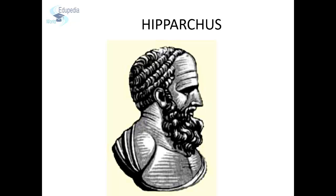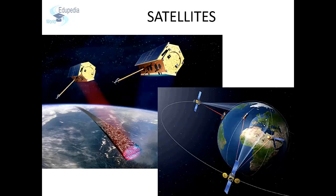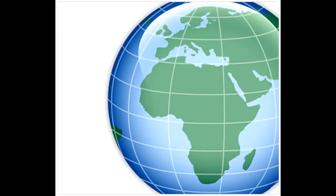It was not until the invention of an accurate clock, or chronometer, in 1736 that longitude could be measured with some accuracy. Today, the task of measuring latitude and longitude has been made simple by navigating satellites in the sky. The lines of latitude and longitude make our grid. The point where latitude and longitude meet is considered the location of that place. Locating places with the help of latitude and longitude has made it easy to pinpoint the location of any place on Earth with accuracy.